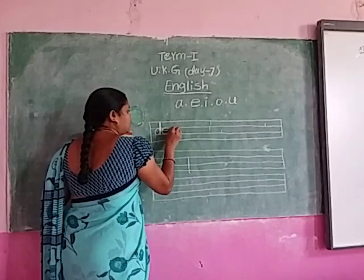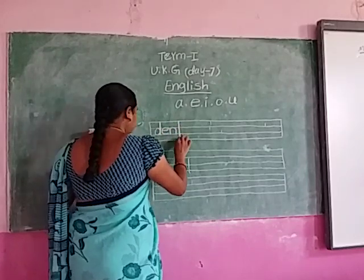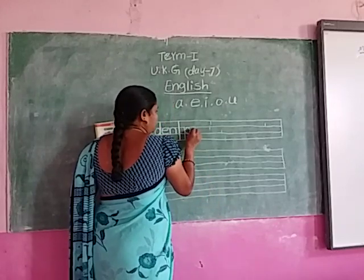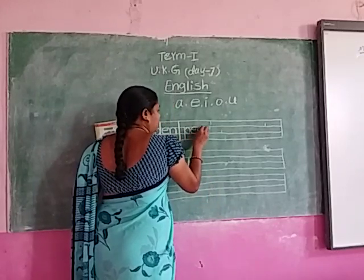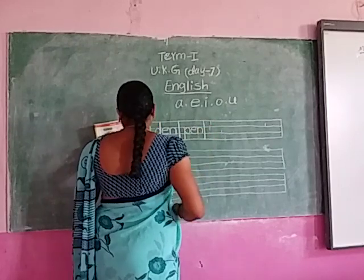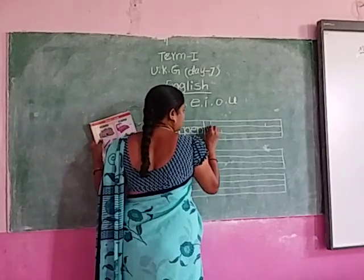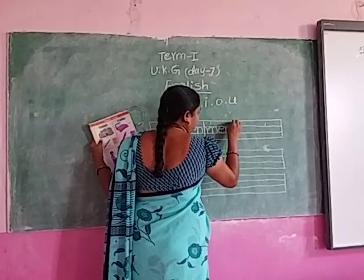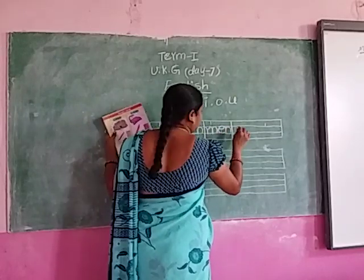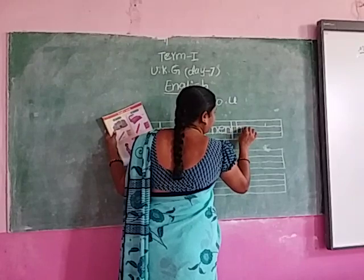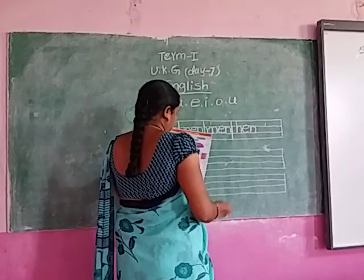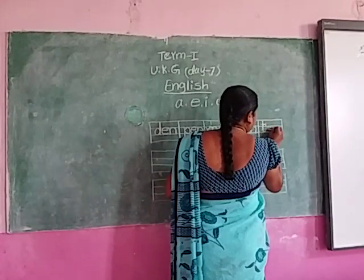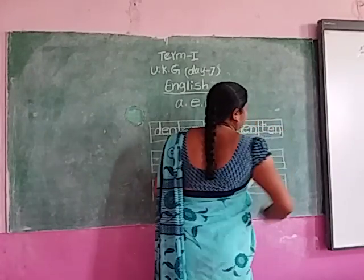Practice on the slate. D, E, N — den. P, E, N — pen. M, E, N — men. H, E, N — hen. Then after, T, E, N — ten.